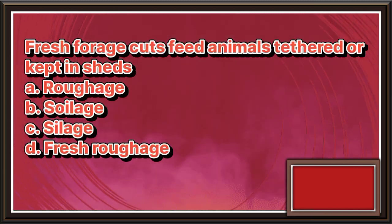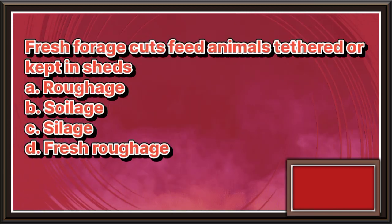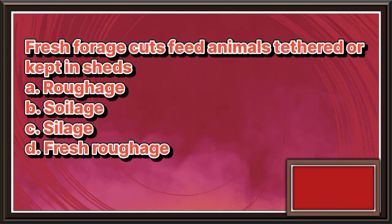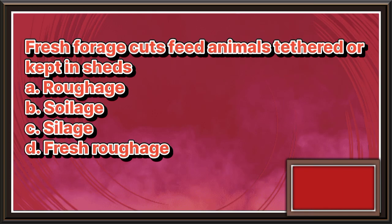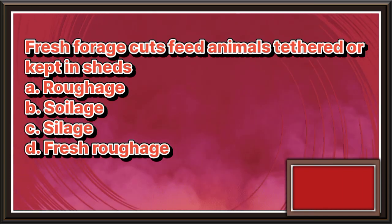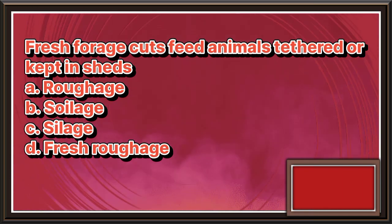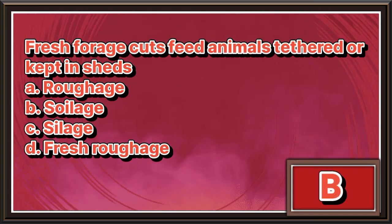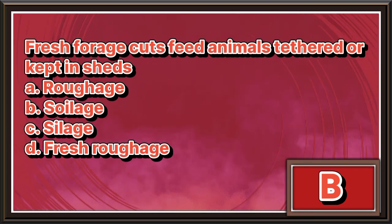Fresh forage cuts feed to animals tethered or kept in sheds. a. Roughage. b. Soilage. c. Silage. d. Fresh roughage. The answer is letter b.